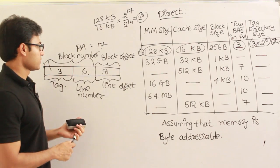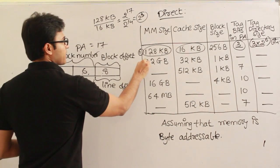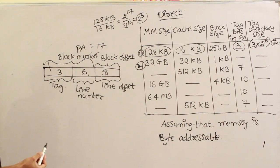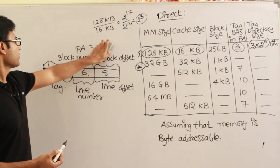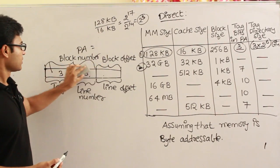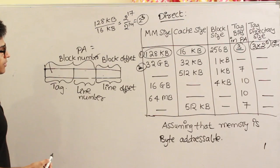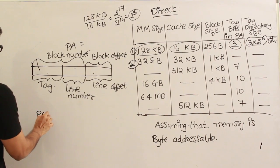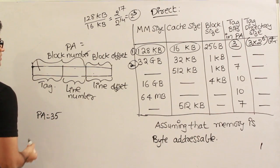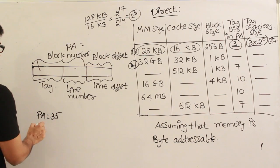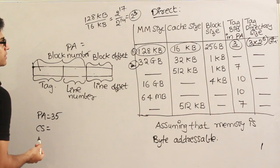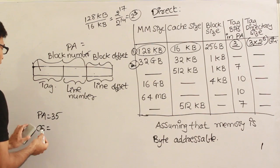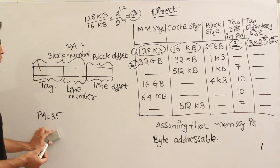Now in the second version, the main memory is 32 GB. Therefore, the physical address is 35 bits, and the cache size is 32 KB.